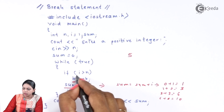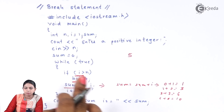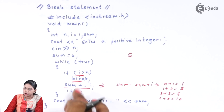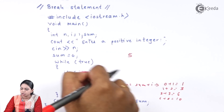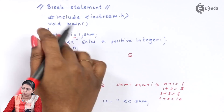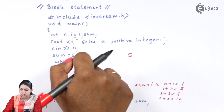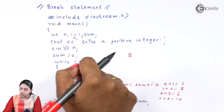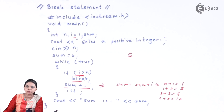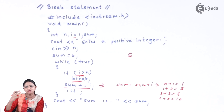When the break condition is true, control is immediately transferred out of the loop — whatever is written after the break statement won't get executed and control won't go back inside the loop. Now if the user enters a negative number like -2, i starts at 1 and 1 is greater than -2, so it immediately breaks out and you won't get any sum printed on the screen. That is how we use the break statement to terminate an infinite loop.